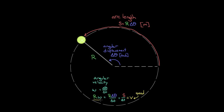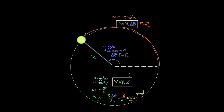So the radius r times the angular velocity omega equals the speed v of the object. This arc length formula relates radians rotated through to distance traveled; this speed formula relates radians per second to meters per second — how many meters per second the object is tracing out along the arc length.